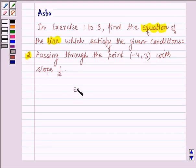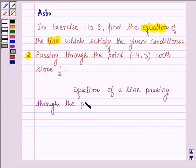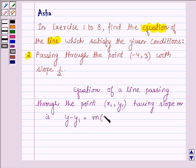So first let us learn the equation of a line passing through the point (x1, y1) having slope m is given by y minus y1 equals m times (x minus x1).